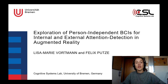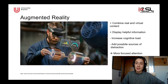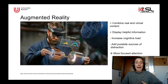One of the obvious advantages of augmented reality is that it combines real and virtual content. This can be used to display helpful information, for example for industry workers. One of the downsides is that it highly increases the cognitive load, because it adds possible sources of distraction. That means that while we use it, we need a more focused attention.